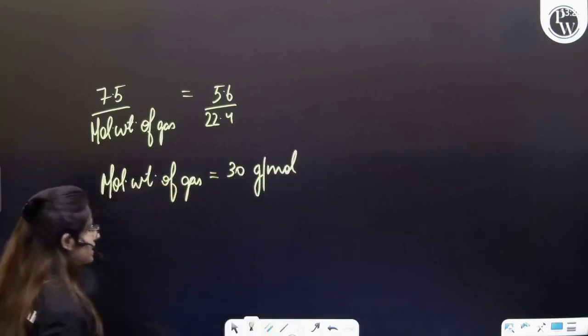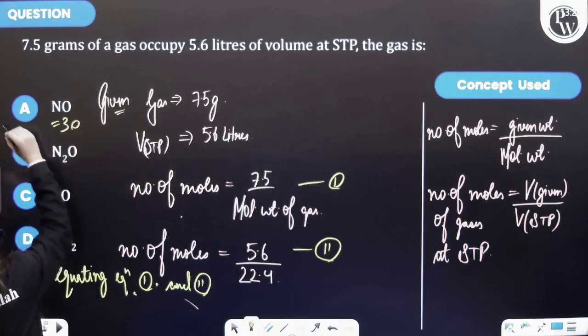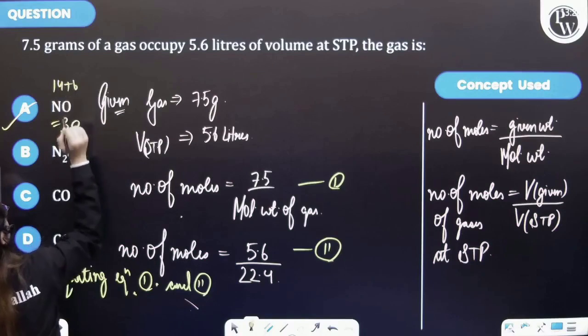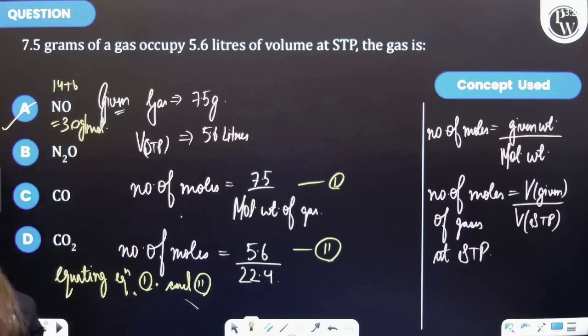Now let's calculate the mass. NO has a mass of 30, so option A is correct. It is having 14 plus 16, so 30 grams per mole. So option A is the correct answer.